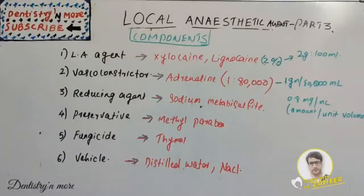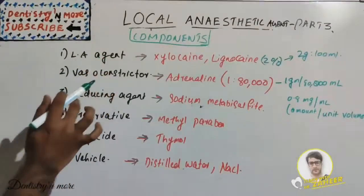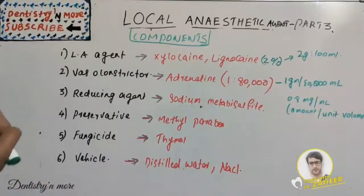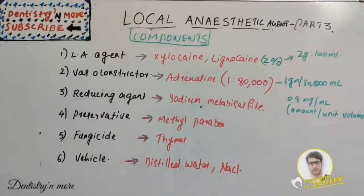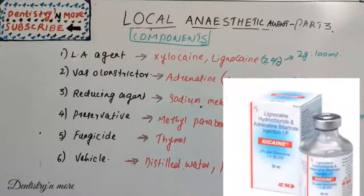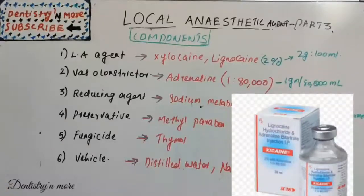The next component is vasoconstrictor. From the name, we get the idea — it is to constrict the vessels. The commonly used one is adrenaline or epinephrine. It counteracts the vasodilatory action by constricting the blood vessels, which decreases the blood flow to the injection area, and slows the absorption of the local anesthetic into the cardiovascular system.